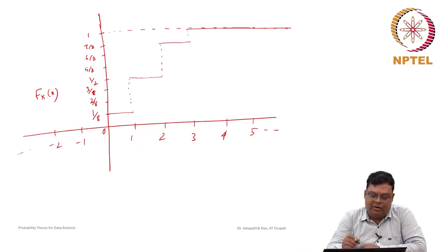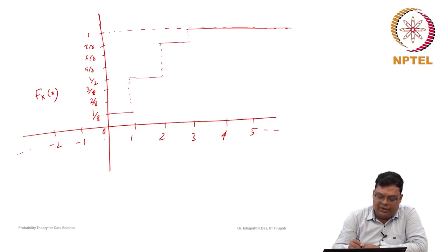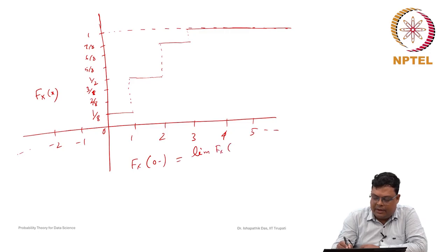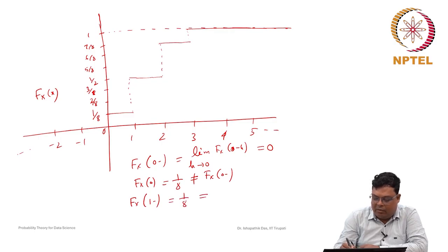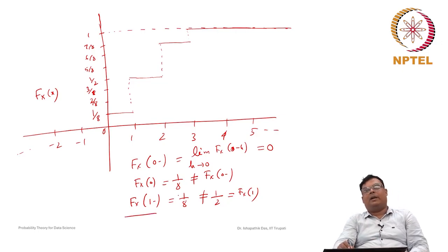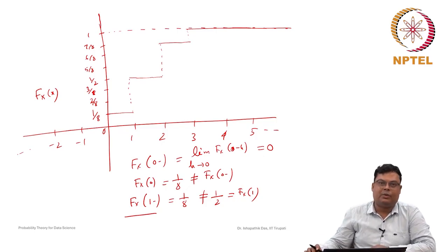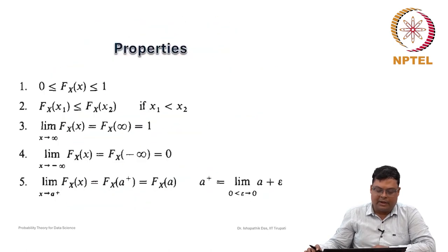You can see that this function has left discontinuity. For example, the left limit at 0, which is F(0⁻) = limit as h→0 of F(0 - h), is 0, but F(0) = 1/8. Similarly, F(1⁻) = 1/8, which is not equal to F(1) = 1/2. So at every point where there is a probability mass, there is a left discontinuity, but the function is always right continuous.